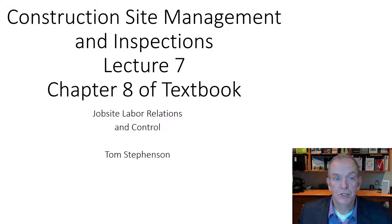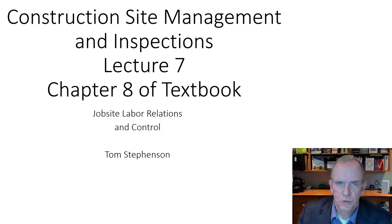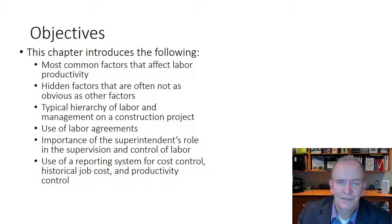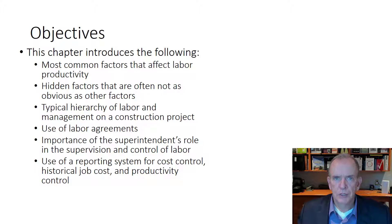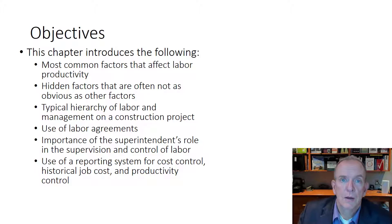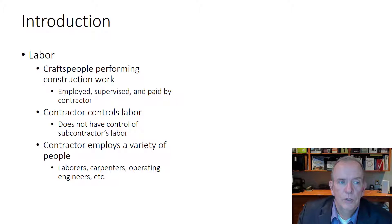Welcome to Construction Site Management and Inspections, Lecture 7. We'll be utilizing material from Chapter 8 of the textbook. Today's topic is job site labor relations and control. We'll look at factors that affect labor productivity — including hidden and not-so-obvious ones — typical reporting hierarchies, labor agreements and hiring practices, employee and subcontractor evaluations, and how a reporting and cost control system works.